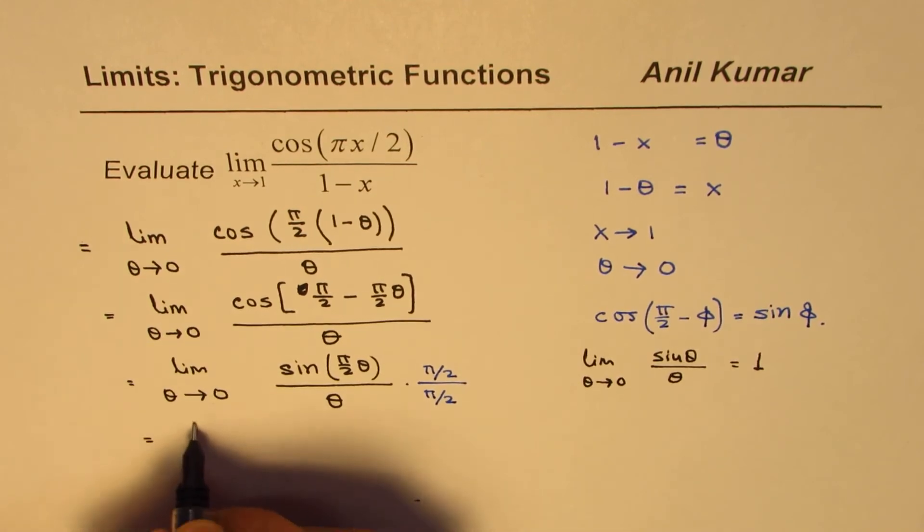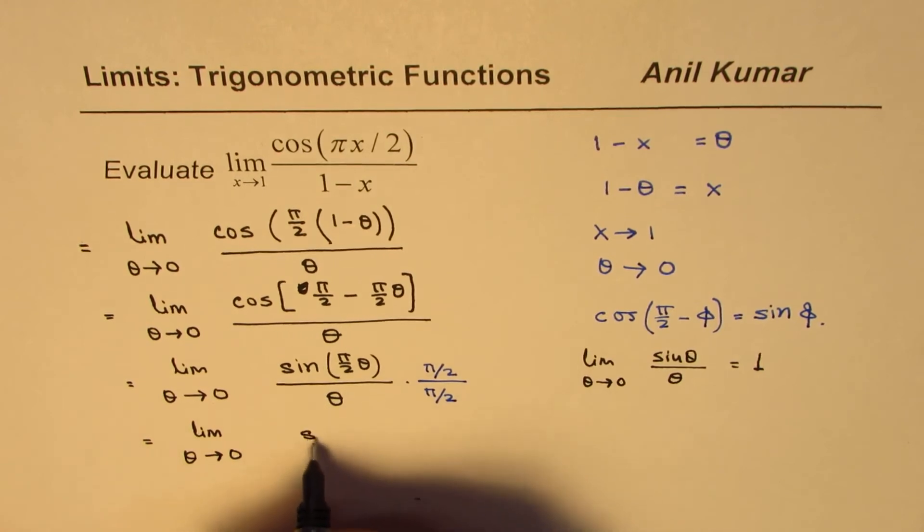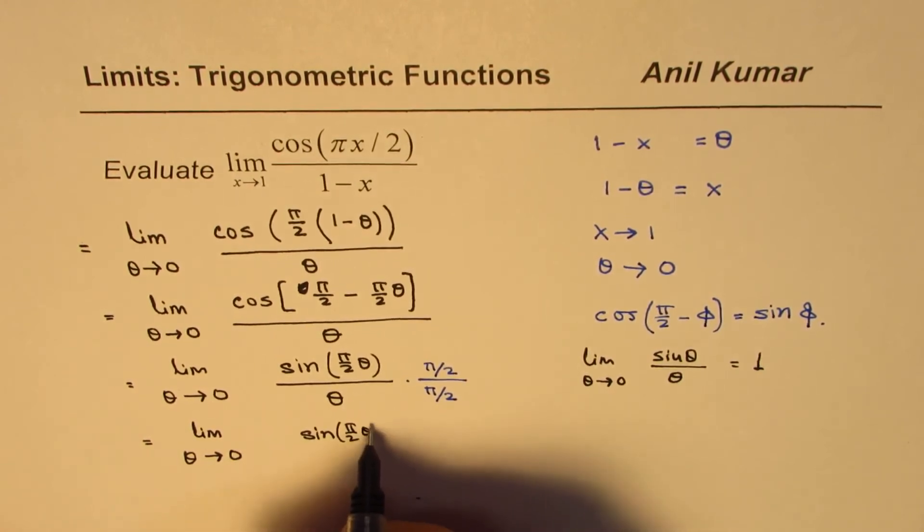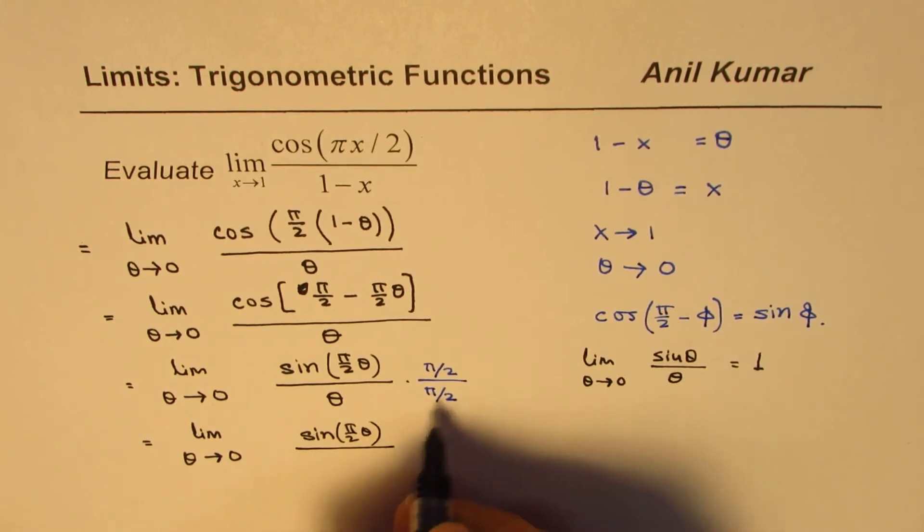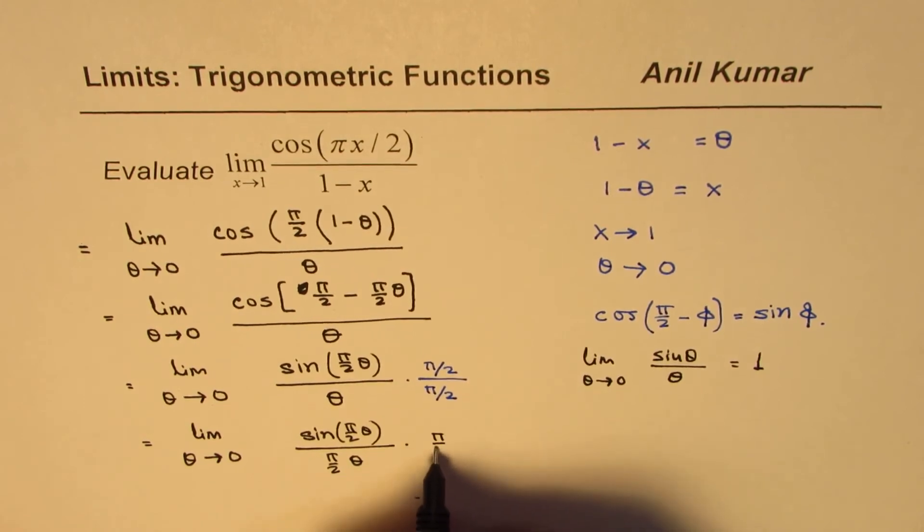So once we do that, we get here as limit θ approaches 0: sin(πθ/2) over πθ/2 times π/2. Is that okay?